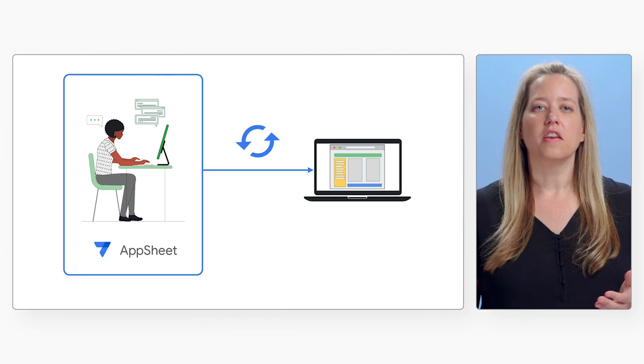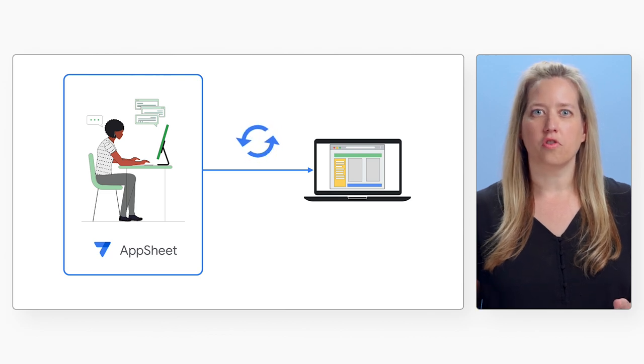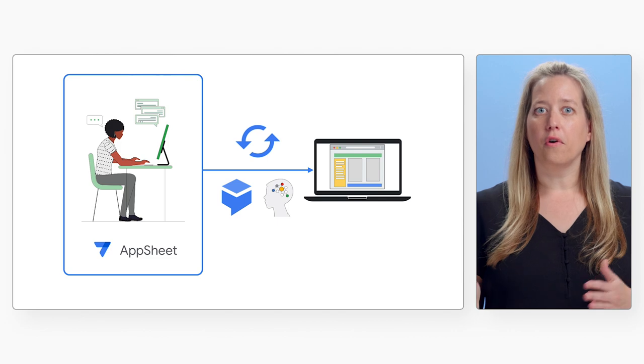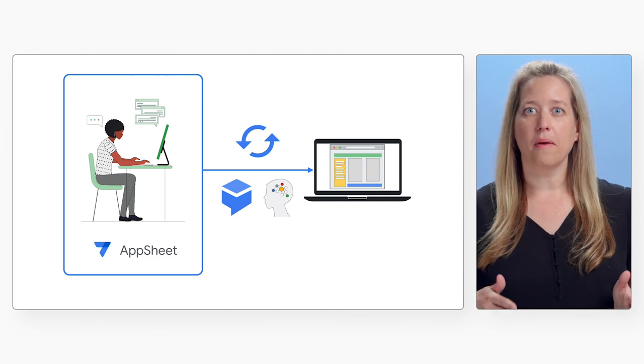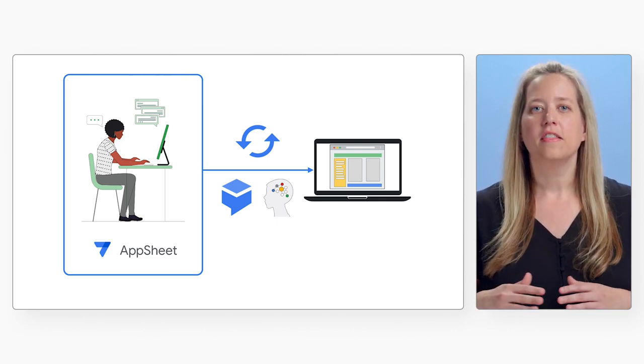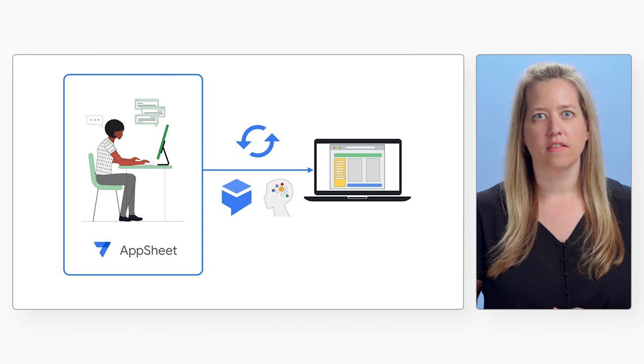The user can then continue working with AppSheet to customize and iterate further on the app. Both Dialogflow and the LLM may be used by AppSheet during this interaction, depending on the complexity of the request. The use of Dialogflow combined with the LLM amps up this capability of AppSheet, reducing latency and creating a polished application for the user to customize and deploy.